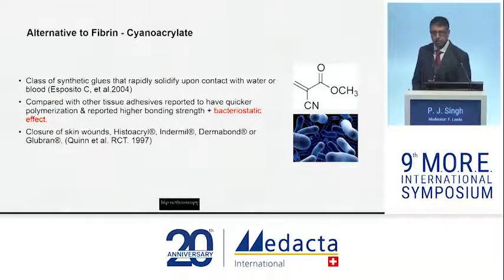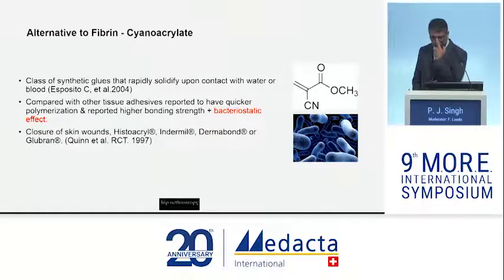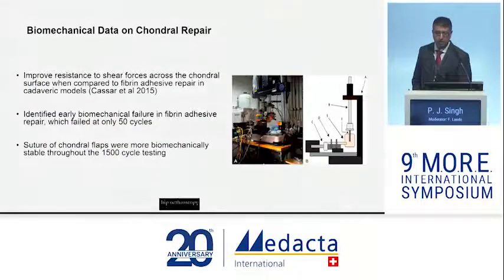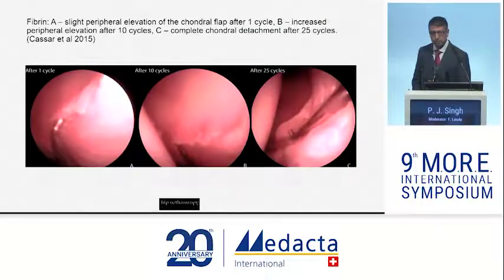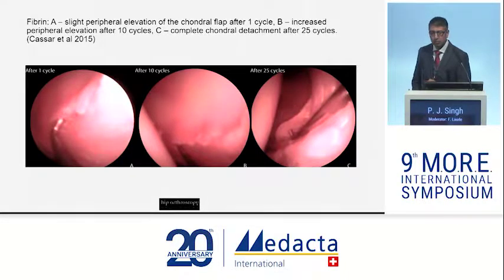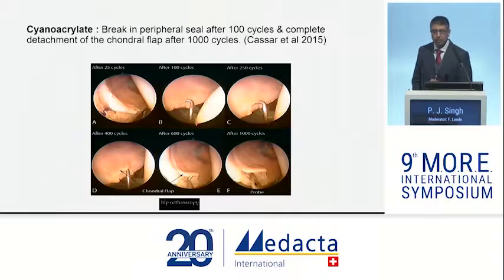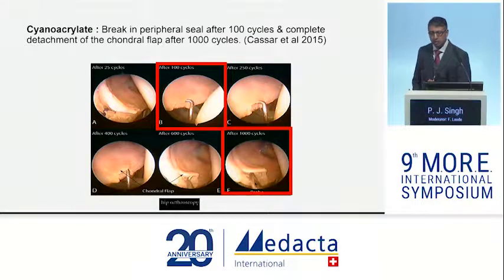What about alternatives to fibrin glue? Cyanoacrylates are seeing increased interest. Their additional benefit is that they are bacteriostatic, as well as having the material properties of fibrin glue. The most familiar is Dermabond, used to close skin. A 2015 biomechanical cadaveric study compared fibrin glue, cyanoacrylate, and suture anchor repair. After 25 cycles, fibrin was delaminating. With cyanoacrylates, the chondral area was failing after 100,000 cycles.